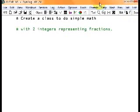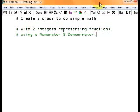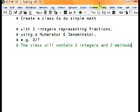Rational numbers. We're going to take two integers representing fractions, for example, a numerator and denominator. An example is 3/7. And the class will contain two integers and three methods, or maybe we'll just stick with one for this example.